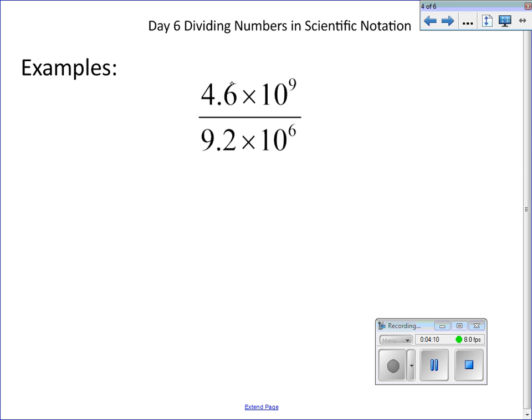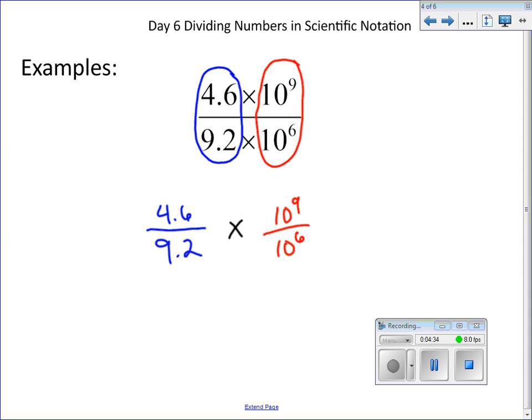Today's is going to be very similar. I want you to regroup. First, you're going to take 4.6 divided by 9.2. Notice, the difference between today's problems and yesterday's problems is that this is division, yesterday's is multiplication. So now I regroup that there, and I'm going to pull my 10 to the 9th over 10 to the 6th over here. You can notice we've just kind of separated these two out. We're going to do them one at a time. I'm going to use the calculator for the division part and type in 4.6 divided by 9.2, and I get 0.5.